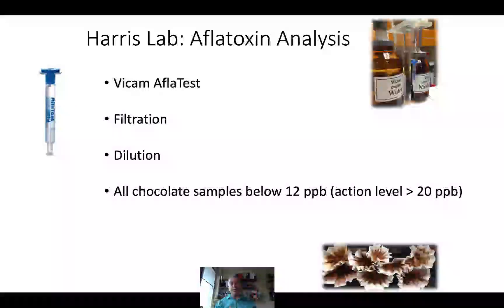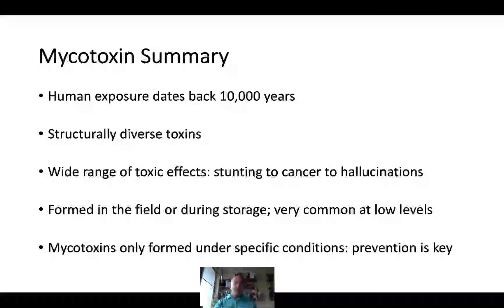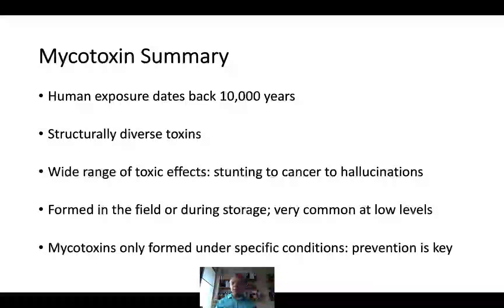In our lab we ran analysis on chocolate products using a Vicam aflatoxin test to look at aflatoxin content, and we found that all of our chocolate samples were below 12 parts per billion—that's the good news. The bad news is that the FDA action level—meaning the level at which products should no longer be sold or consumed—is anything above 20 parts per billion. So we'd like to see levels lower than this, but we did look at this to some degree. Most of the Brazilian chocolate had aflatoxin and ochratoxin present.